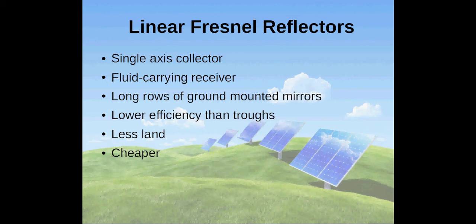Linear Fresnel reflectors are much like parabolic troughs as they use a single-axis collector and a fluid-carrying receiver. However, linear Fresnel collectors are made of long rows of ground-mounted mirrors or reflectors to concentrate the sun's rays. The thermal receiver is elevated and fixed atop the reflectors.